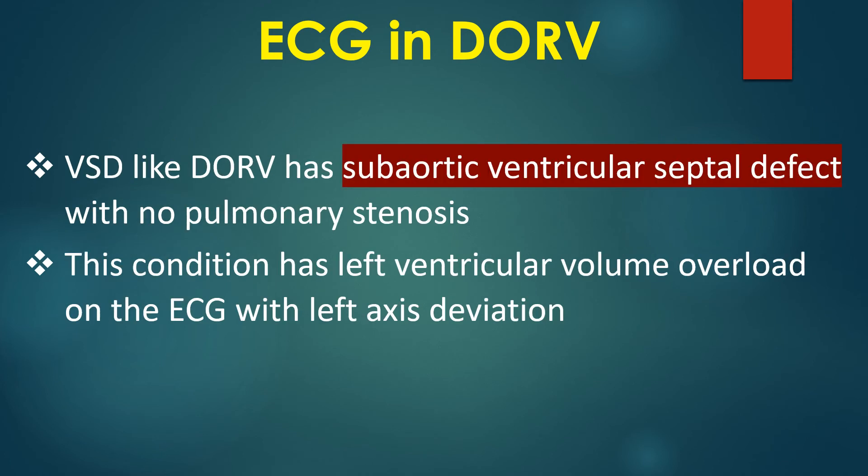VSD-like DORV has a sub-aortic ventricular septal defect with no pulmonary stenosis. This condition has left ventricular volume overload on the ECG with left axis deviation.